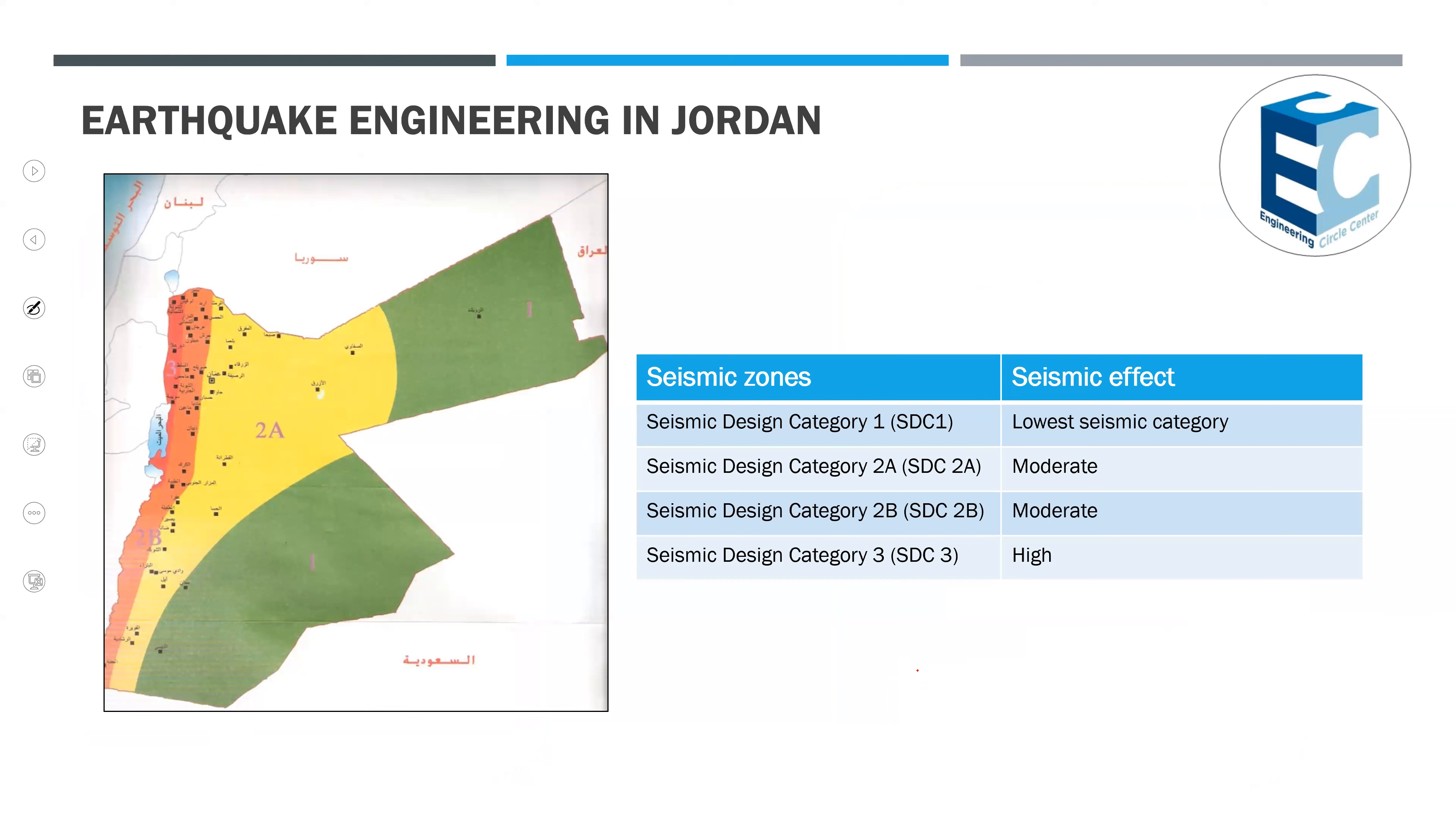This is the seismic map of Jordan. I will do the design of the buildings according to this. If we see here in the zones which are 2B and 3A, when I am working in this direction, the seismic effect increases.